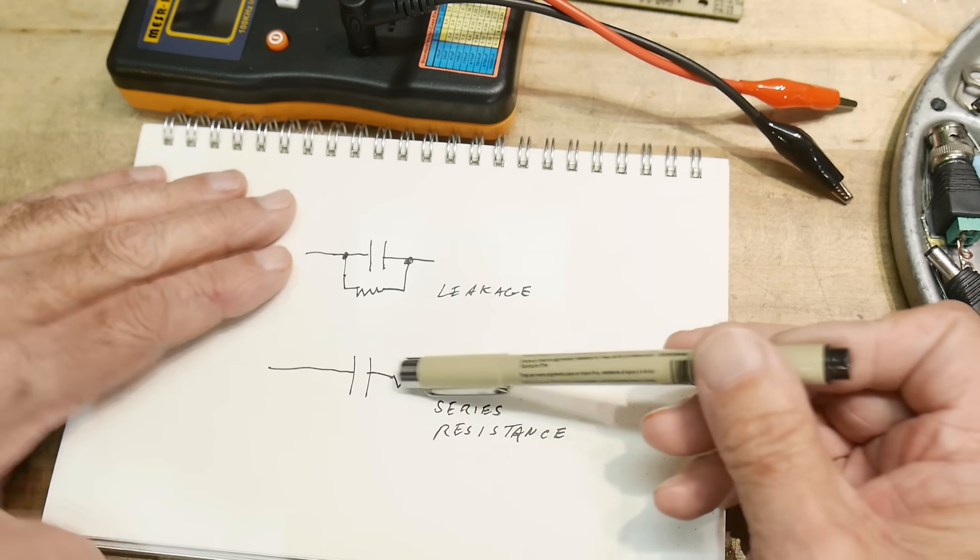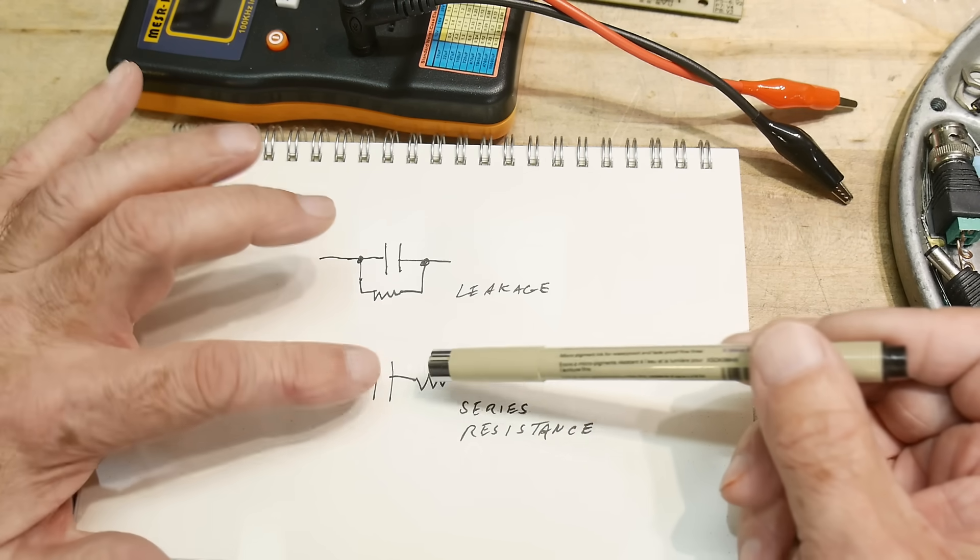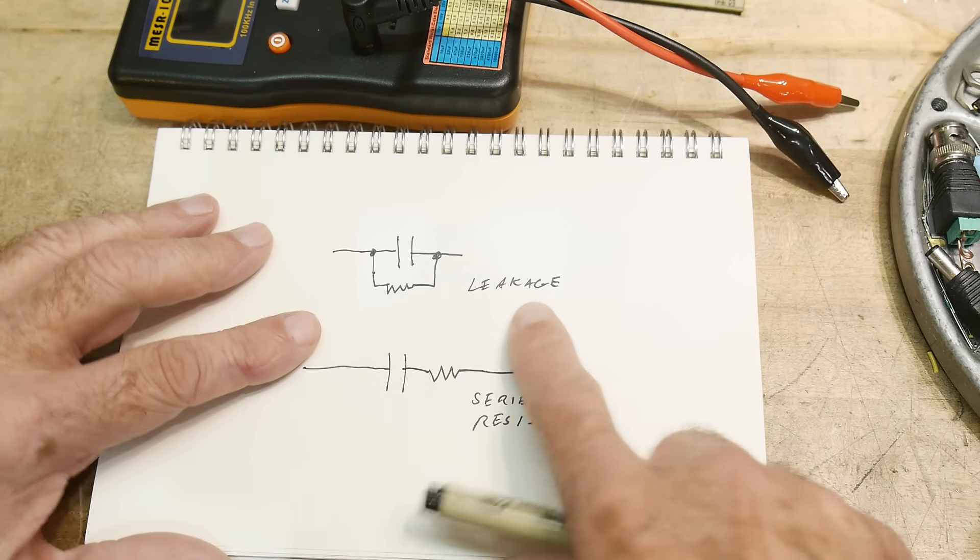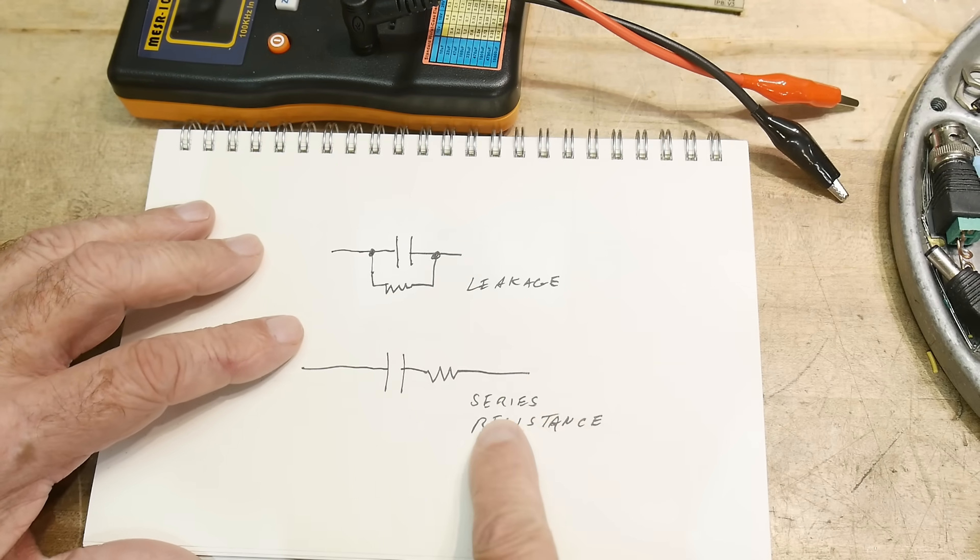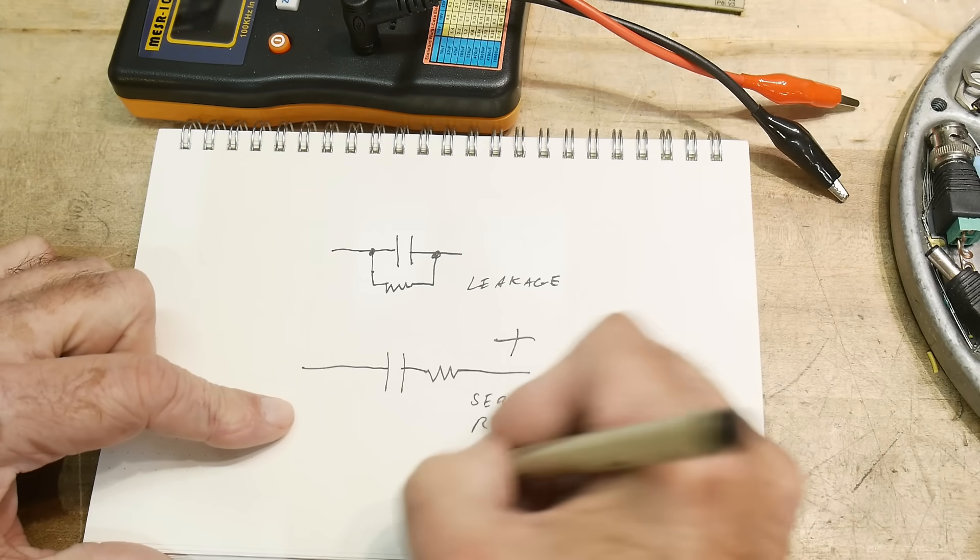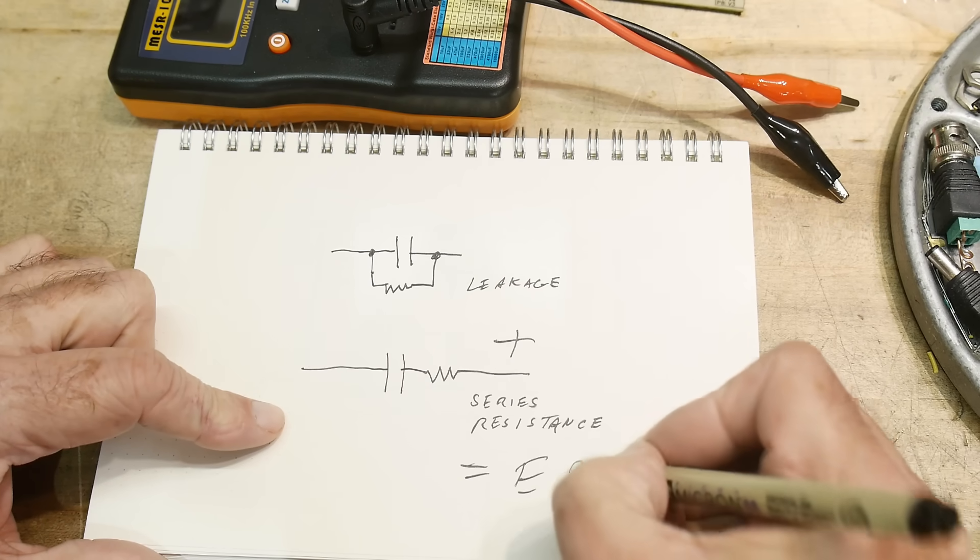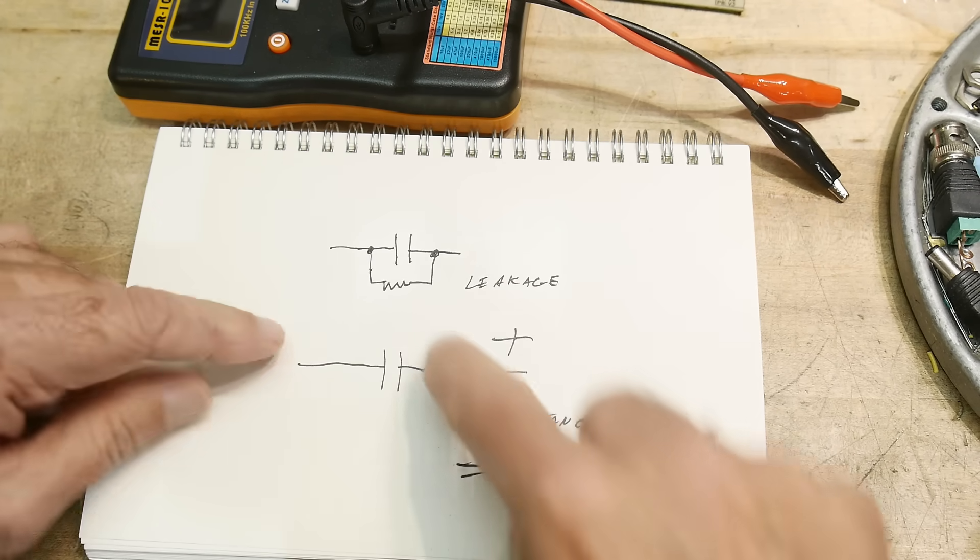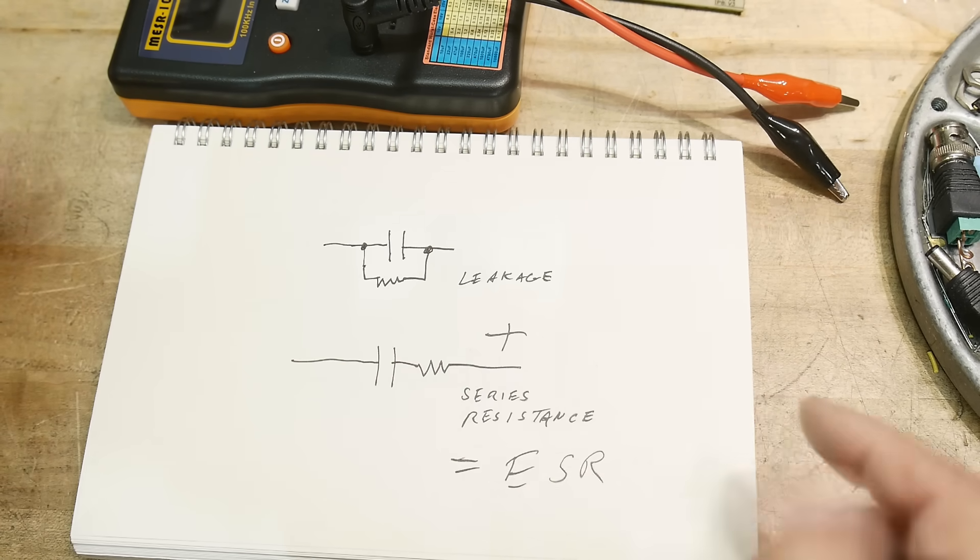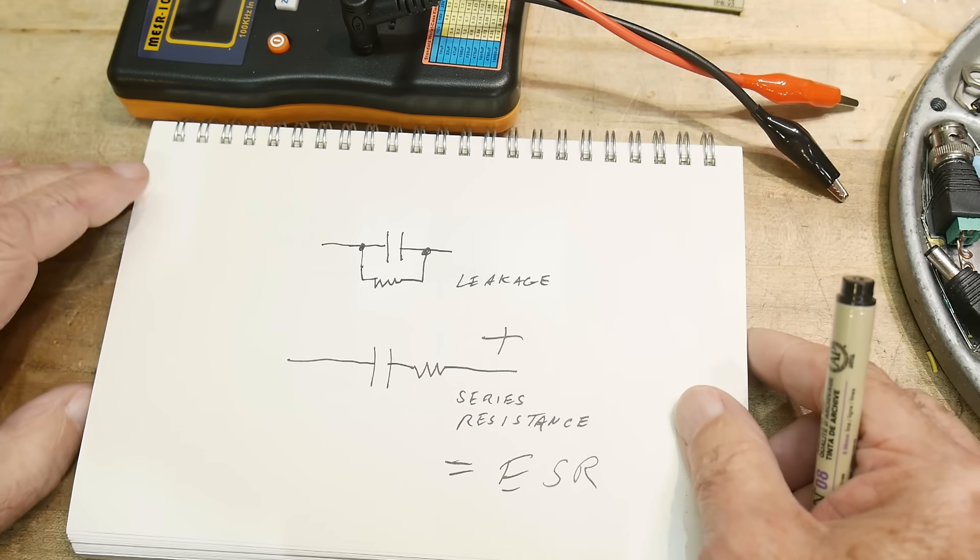Now, it might also have a resistance in series with the capacitor due to other things. So this would be the leakage resistance, this would be the series resistance. And if we add these two together, it equals the effective series resistance. It's a combination of everything, a catch-all.